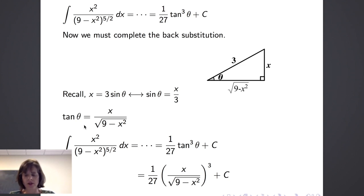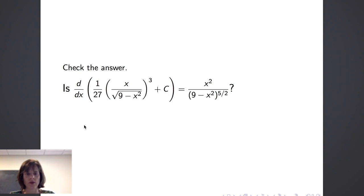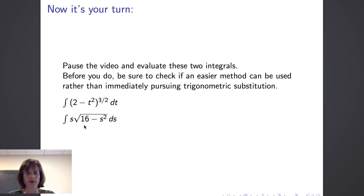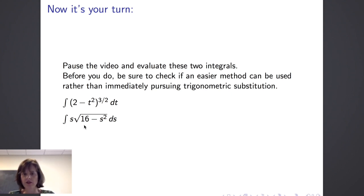To check if our answer is correct, we verify that the derivative with respect to x of one twenty-seventh times x over the square root of 9 minus x squared quantity cubed plus C equals x squared over 9 minus x squared to the 5 halves power. I'll leave that for you to check, but in general that's the process you should use. Now pause the video and evaluate the next two integrals. Always check first to see if something easier can be used — for example, can you use u substitution? Think strategically to eliminate unnecessary work.